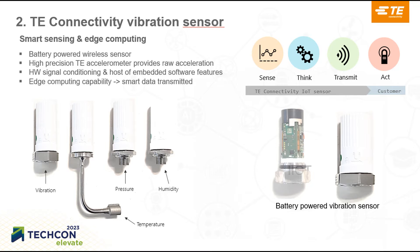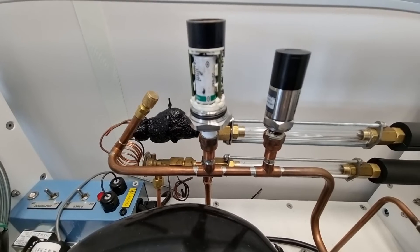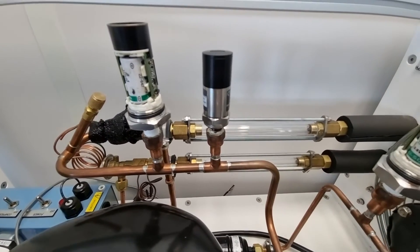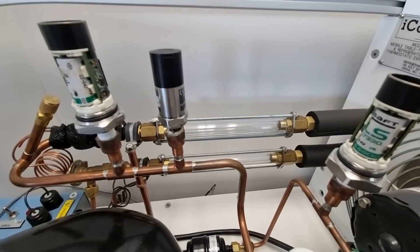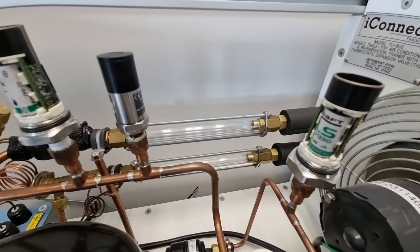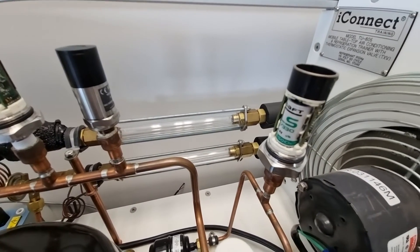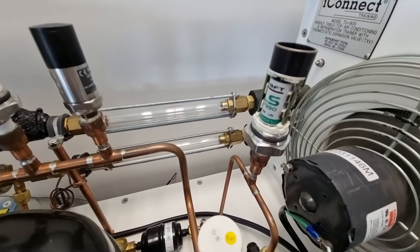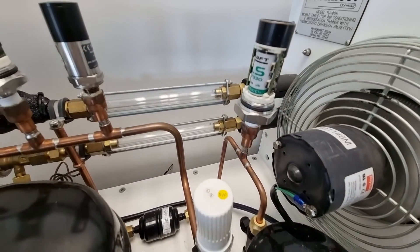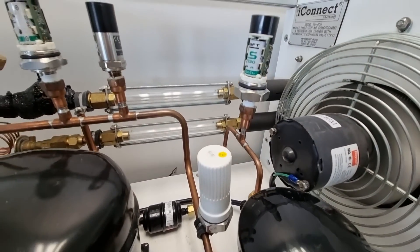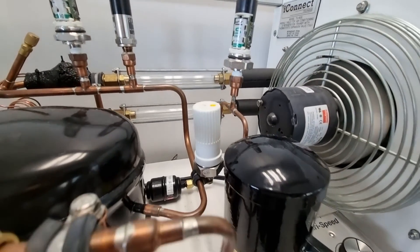TE Connectivity provides a set of wireless sensors for condition-based monitoring such as pressure, temperature, humidity sensors, and vibration sensor, which is the focus of this presentation. We provide a battery-powered device with high-precision accelerometer, hardware signal processing, and embedded firmware features fully configurable by the customers. Our device has edge computing capabilities which allows sending only smart and useful data through Bluetooth and LoRa communication protocols.